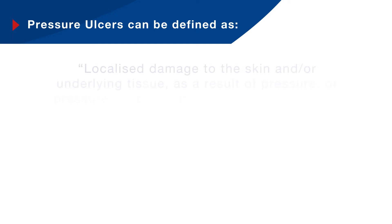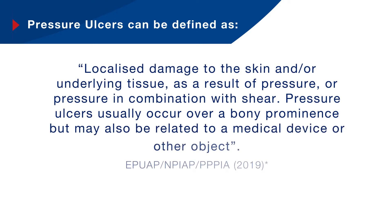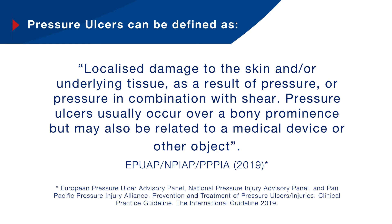So if we start with the definition of a pressure ulcer: pressure ulcers can be defined as localised damage to the skin and/or underlying tissue as a result of pressure, or pressure in combination with shear. Pressure ulcers usually occur over a bony prominence but may also be related to a medical device or other object. Pressure ulcers are categorised by their severity and may be limited to the superficial tissue, tissues of the epidermis and dermis, or extend to deeper tissue exposing and/or involving muscle, tendon and bone.